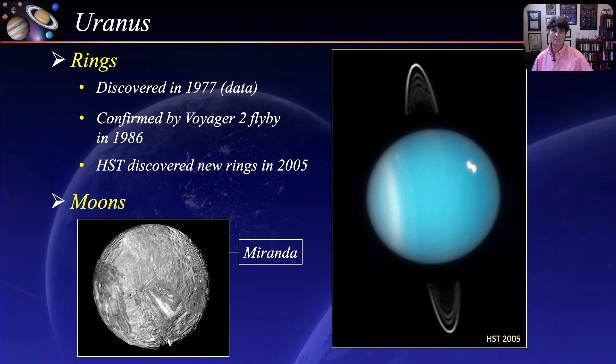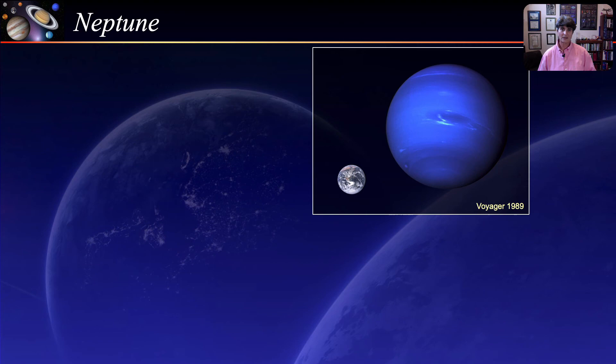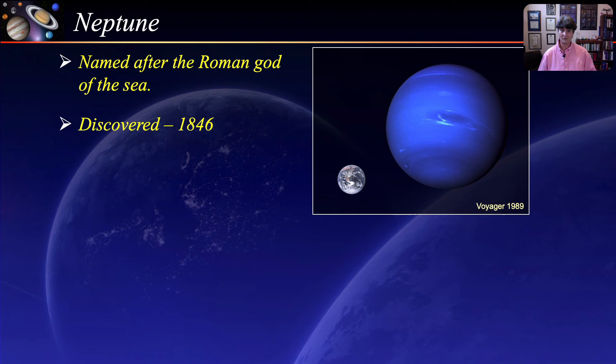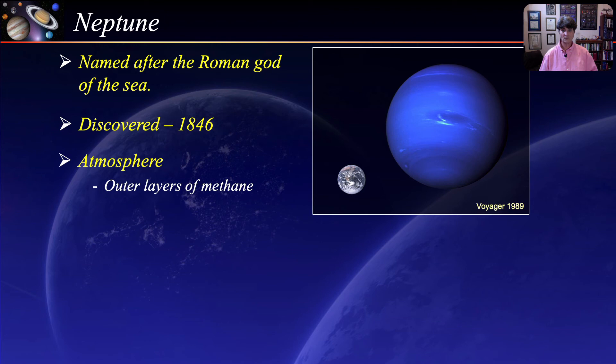Neptune is the eighth and most distant planet in the solar system, named after the Roman god of the sea. Neptune was discovered in 1846 and is the first planet discovered based on the theoretical prediction of its existence. As with the other gas giants, Neptune is mostly hydrogen and helium with an outer layer of methane which gives it its bluish appearance. Although the atmosphere is similar to Uranus, Neptune is stormier — this 1989 image taken by Voyager 2 shows Neptune's great dark spot, a huge storm that had disappeared five years later when imaged by the Hubble Space Telescope, although Hubble found another storm indicating a very active atmosphere.